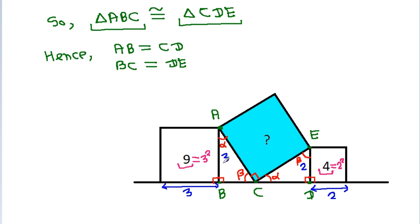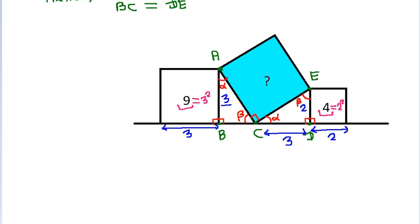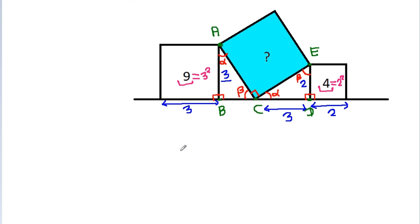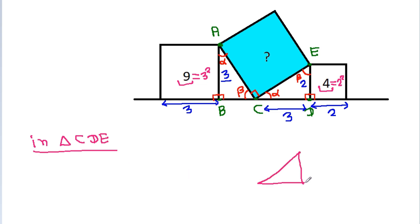AB is 3, so CD will be 3. Now in triangle CDE, CD is 3 and DE is 2.